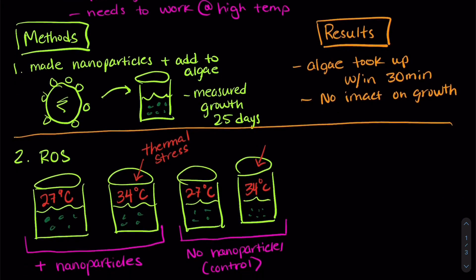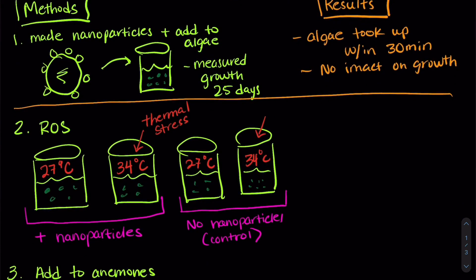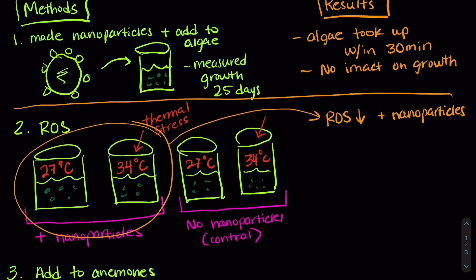The second part of the experiment, they found that the reactive oxygen species went down when they added the nanoparticles. So these two beakers right here, they found that the reactive oxygen species went down. And they found that it worked at both temperatures. So that's good if we have our thermal stress temperatures in the environment.